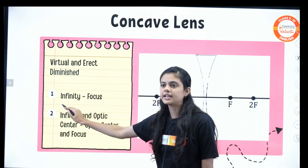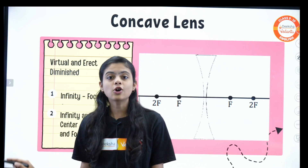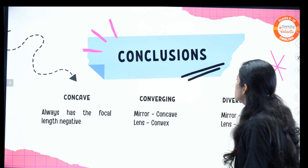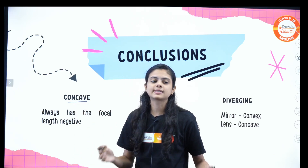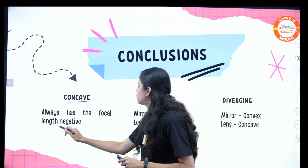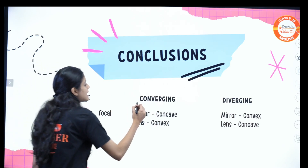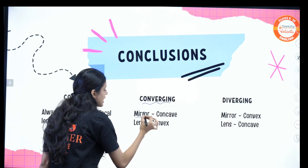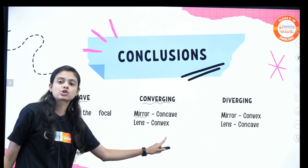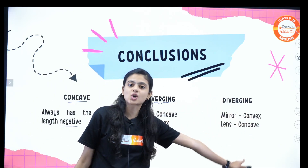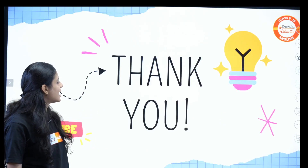For concave lens: object at infinity gives image at focus; for any object between infinity and optic center, the image is between optic center and focus. Key conclusion points: for concave mirror or concave lens, the focal length is always negative — remember this for numericals. For mirrors, converging is concave and diverging is convex; for lenses it is the opposite — converging lens is convex and diverging lens is concave.